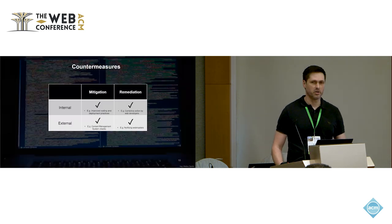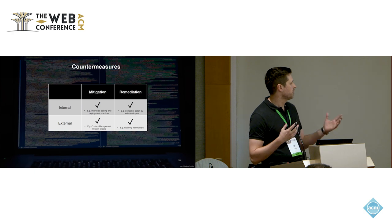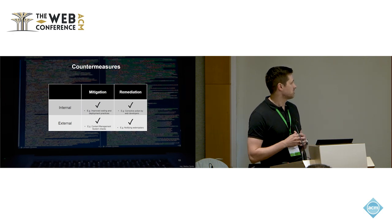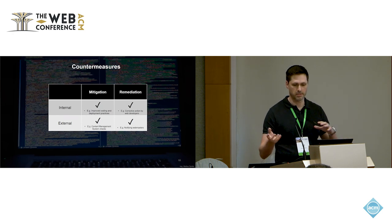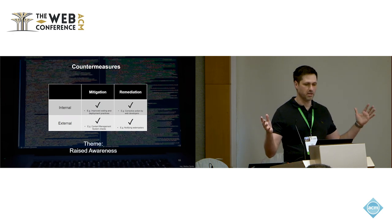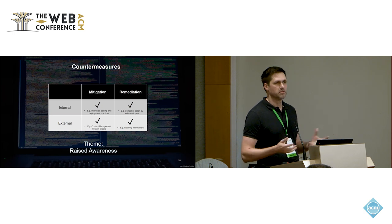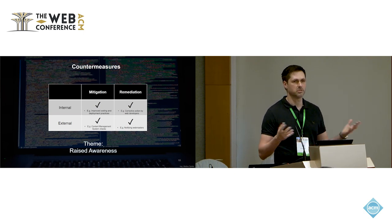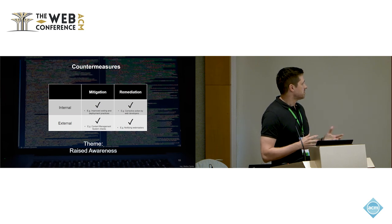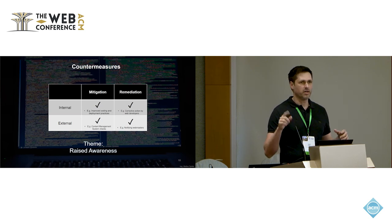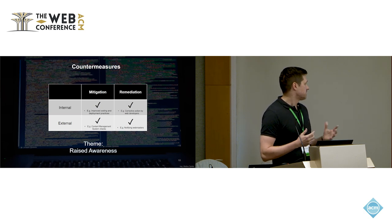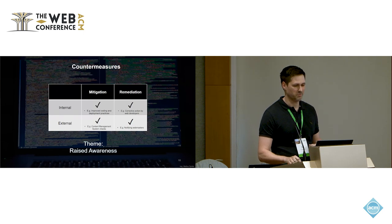We don't just want to say there's a problem — we want to present countermeasures. We presented countermeasures along two axes: mitigation and remediation, both internal and external actions. The main theme is raised awareness. It is not hard to fix this problem — you just have to crawl your site, and if there are any broken links, just fix them. Even in GitHub, there are YAML files that will do this automatically — you just have to enable it. Nevertheless, it seems to be a pervasive problem, probably because developers are in a bit of a rush.